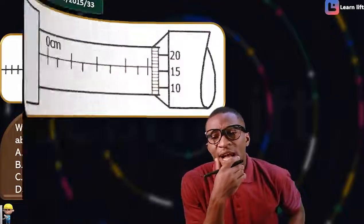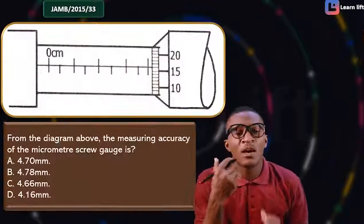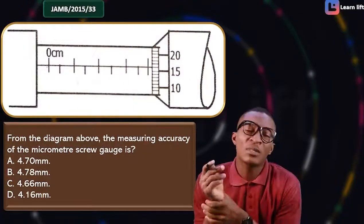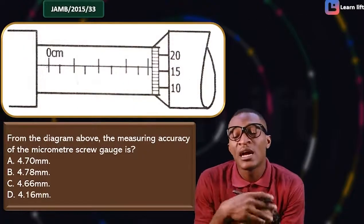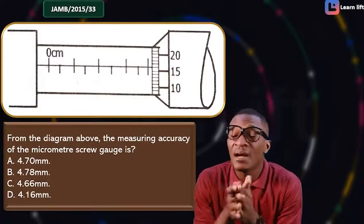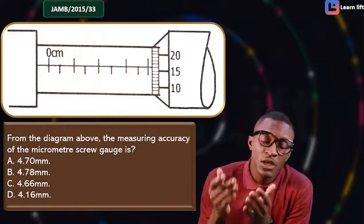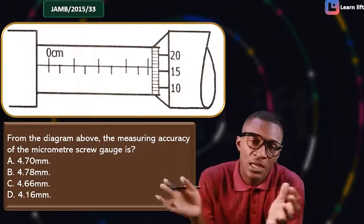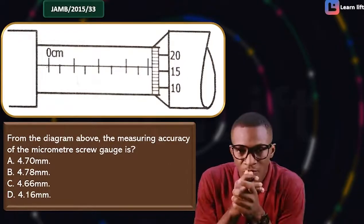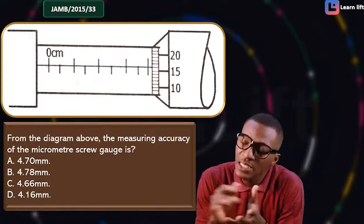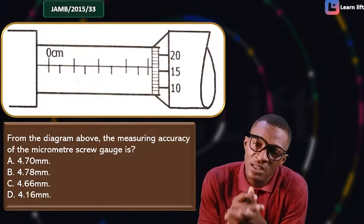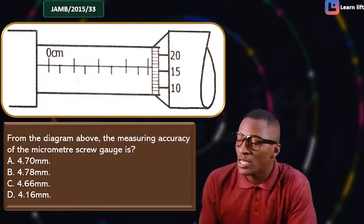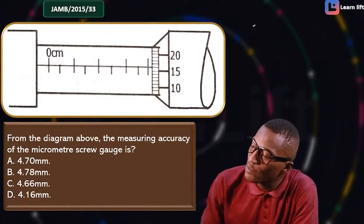Now let's look at the micrometer screw gauge. For both the micrometer screw gauge and vernier caliper, the method is the same: get the main scale reading, get the screw scale reading, and add them together.